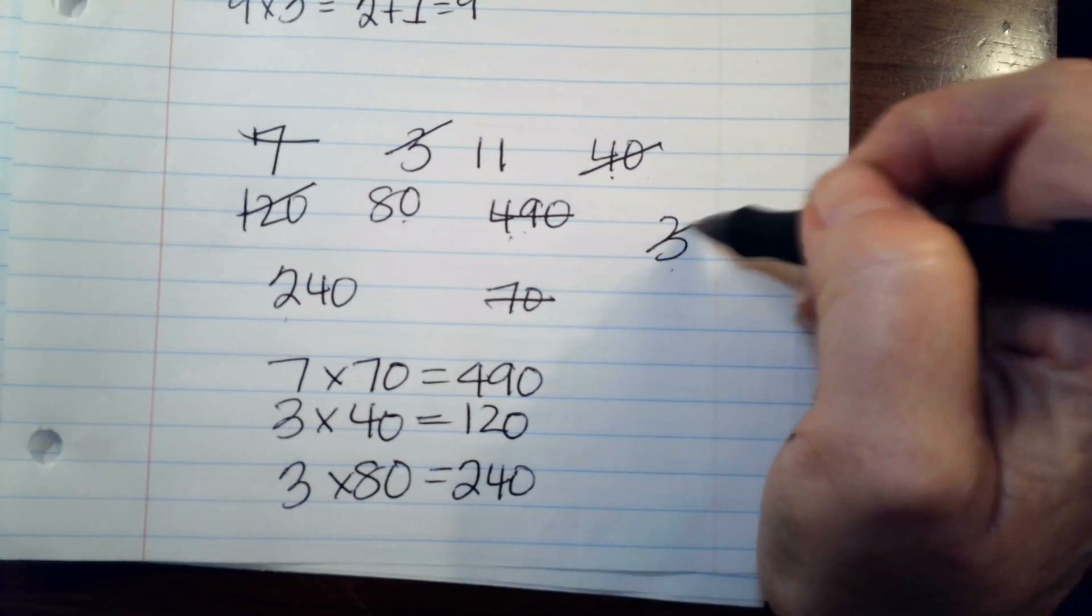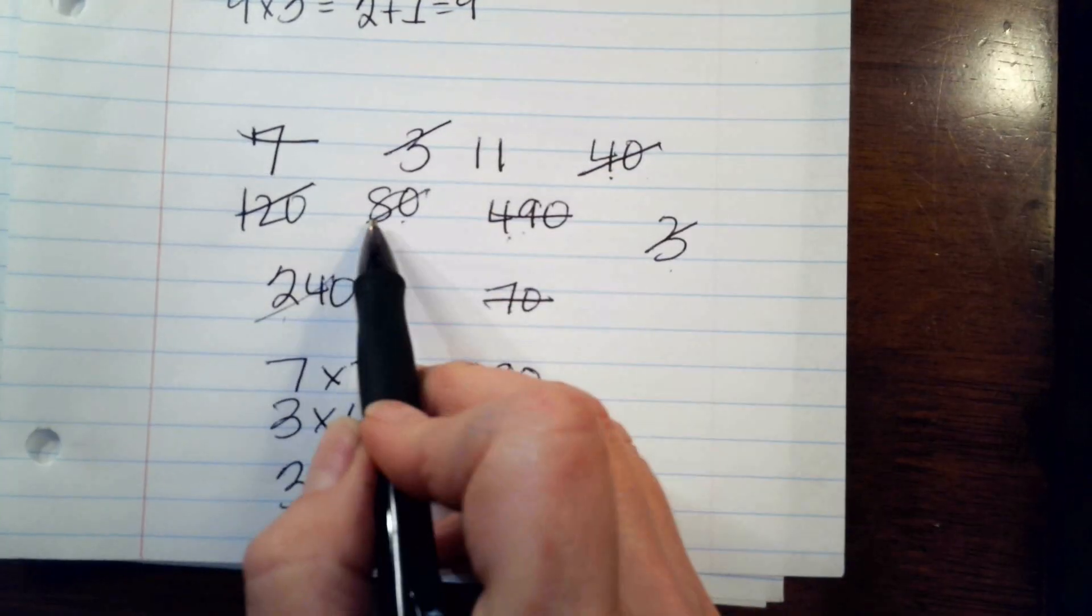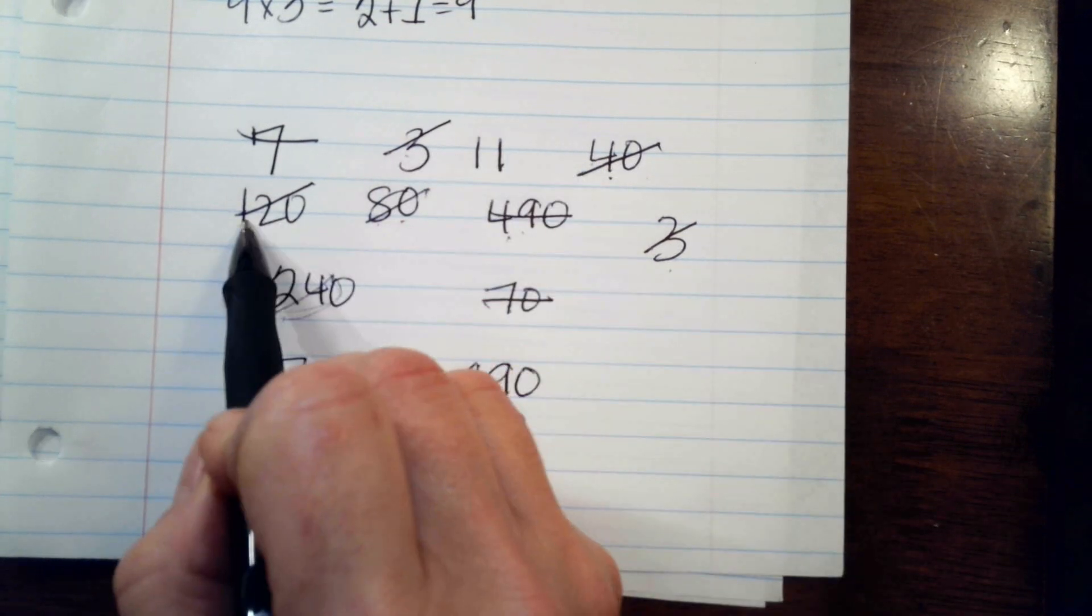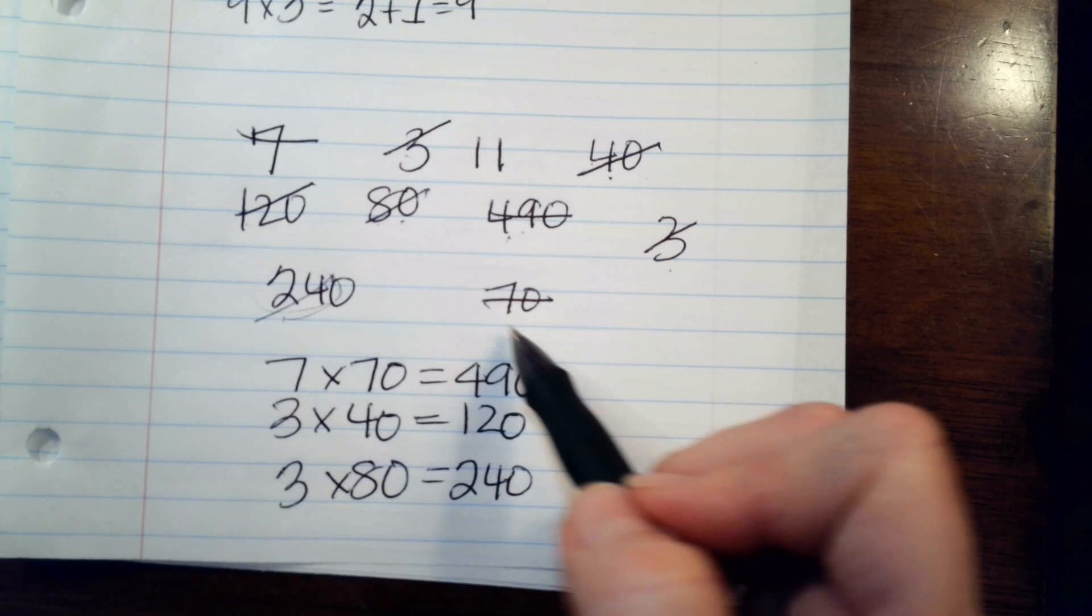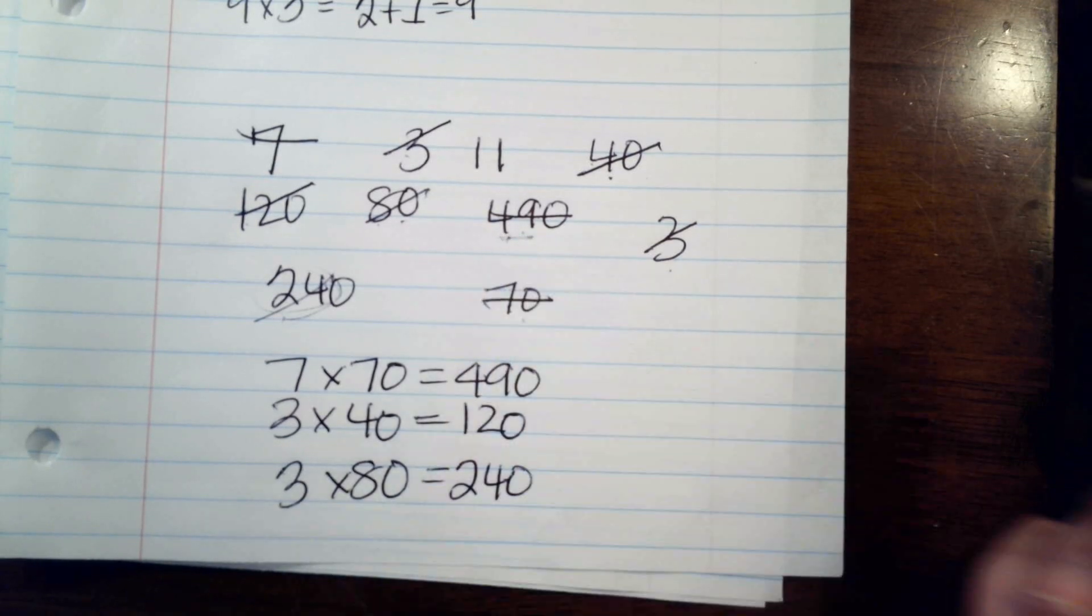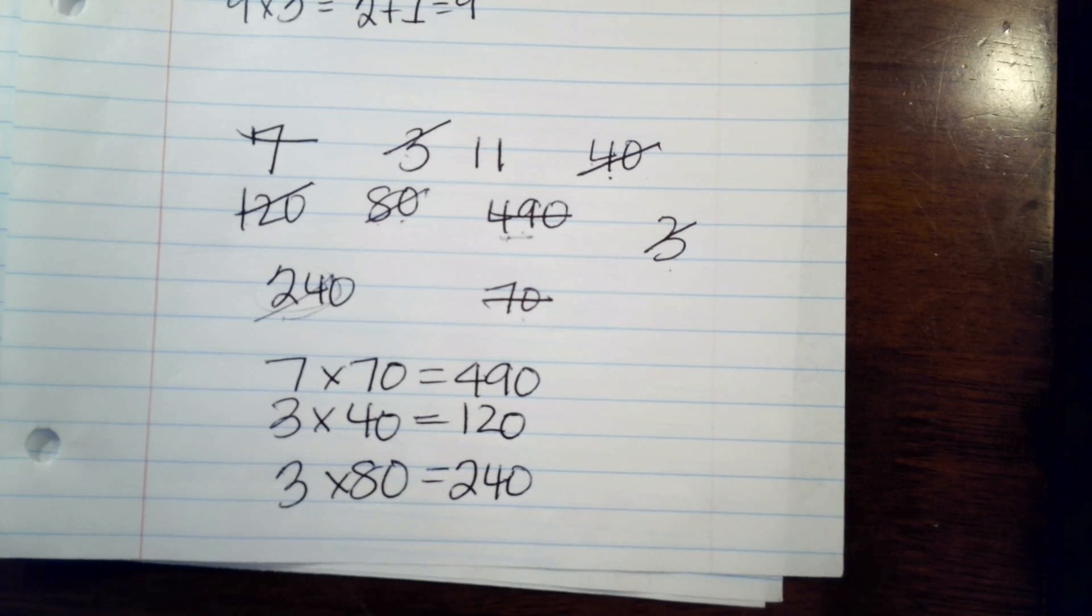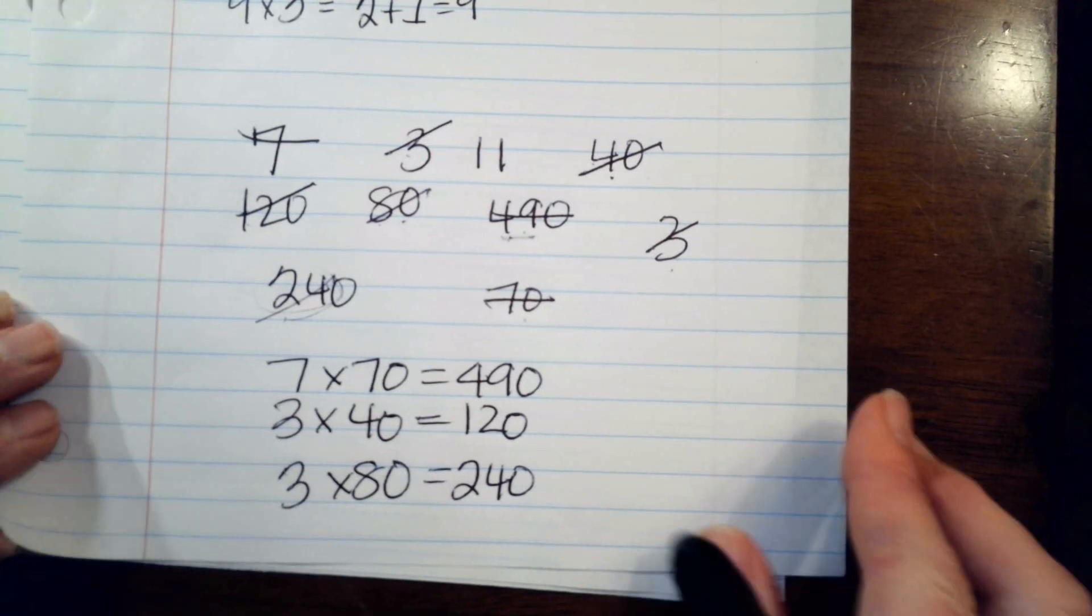Do you see how I did that? I kind of said, well, eight times three, and there's a twenty-four right here. Three times four, and there's a twelve. Seven times seven, and there's a forty-nine. So, do you see how those kind of start to pop out at you once you know your fact families really well? Yes.